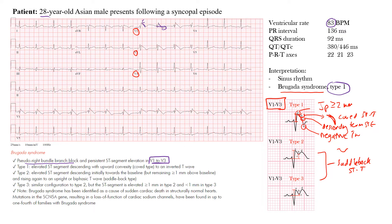On the sample EKG, that coved ST segment is coming down and descending below baseline. You can also see in V1 and V2 the RSR prime pattern, which represents that pseudo right bundle branch block — that's how we initially define this. That's type 1.